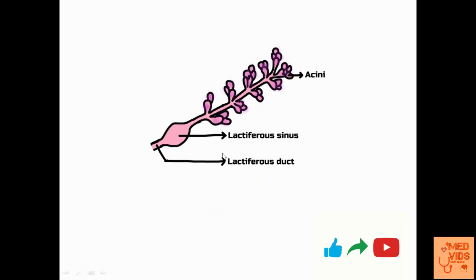This is a simplified picture of a single lobe. Starting from the nipple and entering a single lobe, we have the distal part of the lactiferous duct and a small dilatation called the lactiferous sinus. Further in is the continuation of the lactiferous duct, which is the large duct, and in the large duct there are multiple openings of various terminal ducts arising from acini. A single lobule consists of various acini and terminal ducts, and multiple lobules open into the large duct.